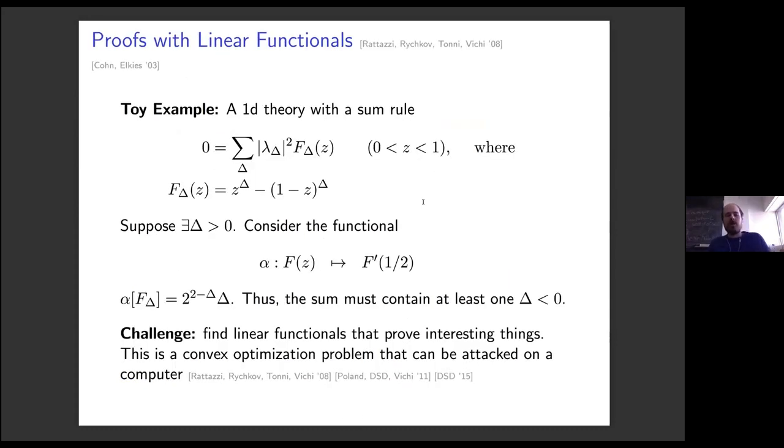Here's a very toy example of the idea of the method of linear functionals. Let's imagine a theory with a sum rule. In this case, it would be like a 1D scale-invariant theory. The sum rule says that a sum over the spectrum of the theory—there are some deltas which are like scaling dimensions of this theory—of some positive quantities lambda squared times a known function is equal to zero. This is the general form of a kind of sum rule that you often get in quantum mechanics. The squared quantities would come from norms of states, and the known functions would come from using symmetries to constrain matrix elements.